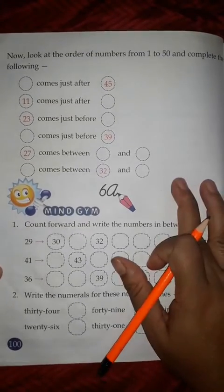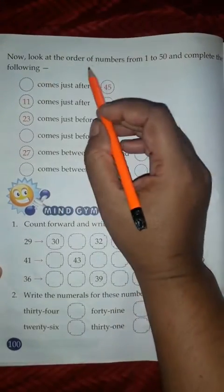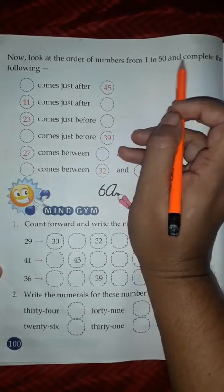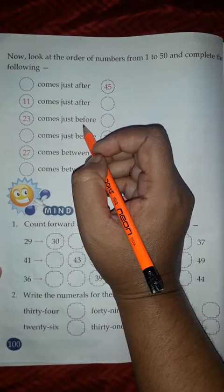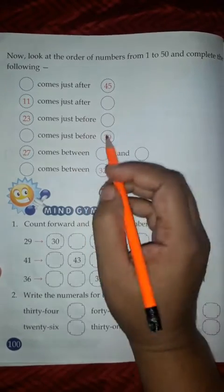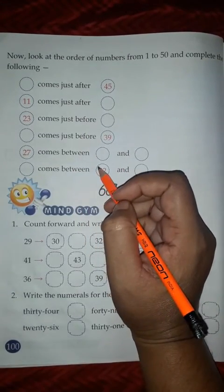Read it. Now look at the order of numbers from 1 to 50 and complete the following. You have to write just after number, just before number, and between number. OK.